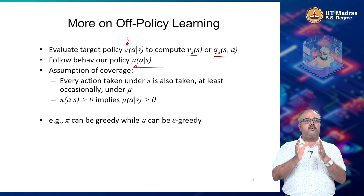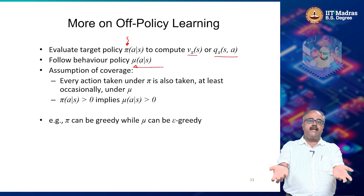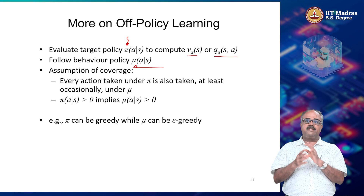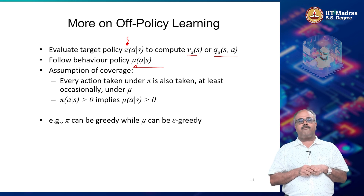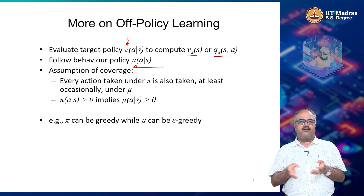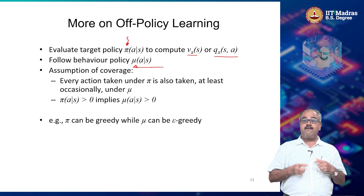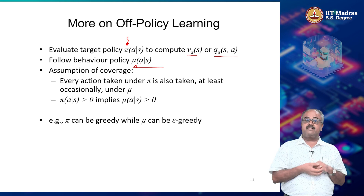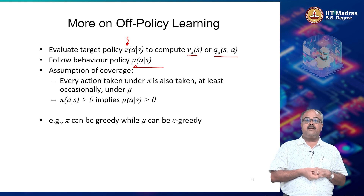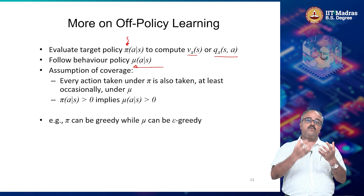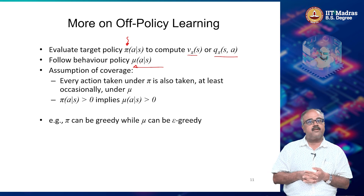In such a case, you will not get any exploration in the world while you are drawing samples, and therefore you might get stuck in some local optima. Therefore, you want to have some kind of stochastic behavior in order to draw samples. Your behavior policy could be stochastic while your target policy could be deterministic. This is one of the most common cases where we use off-policy learning.